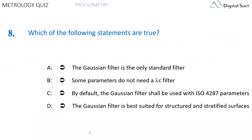Question number eight. Which of the following statements are true? Answer A: the Gaussian filter is the only standard filter. Answer B: some parameters do not need a lambda C filter. Answer C: by default, the Gaussian filter shall be used with ISO 4287 parameters. Answer D: the Gaussian filter is best suited for structured and stratified surfaces. Multiple answers are allowed.